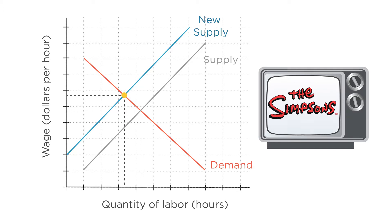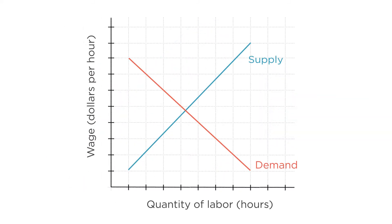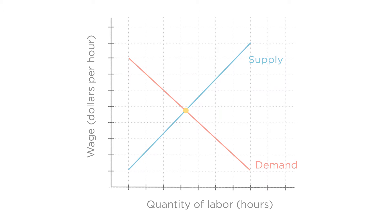To recap, just like goods, labor has an upward sloping supply curve and a downward sloping demand curve, and where the two cross is the equilibrium of the competitive market. But what if we don't like the wage given by the equilibrium? What happens if we, or the government, decides to change it?